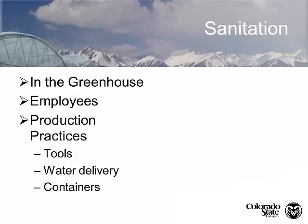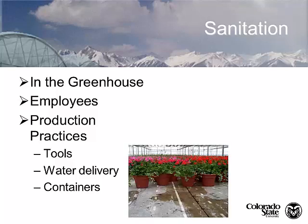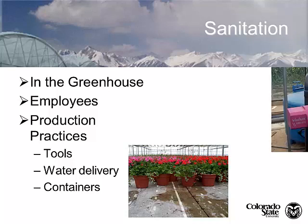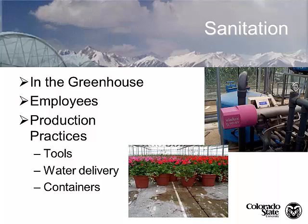Regarding employees in the greenhouse and their production practices: one of the biggest problems is ensuring employees aren't moving plant diseases around. Many viruses — including Tobacco Mosaic Virus — can be transmitted by fingers, tools, water, or containers. We use foot dips so that when employees move from greenhouse to greenhouse, they step through a sanitary bath to clean their shoes.